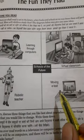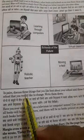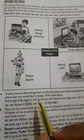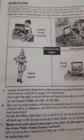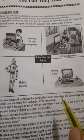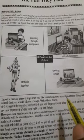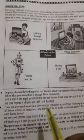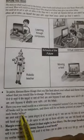This is the school of the future where learning comes through computers, virtual classrooms, robotic teachers, and moving e-text. In pairs, discuss three things that you will like best about your school and three things about your school that you would like to change, and write them down. You can make the pair with your friends anywhere and write down three things you like the most and three things you would like to change — discuss and write them in your notebook.